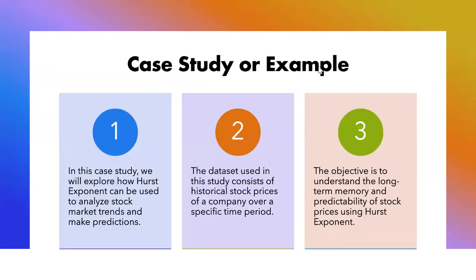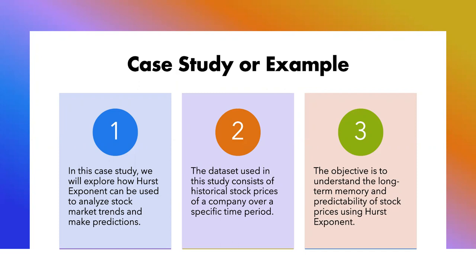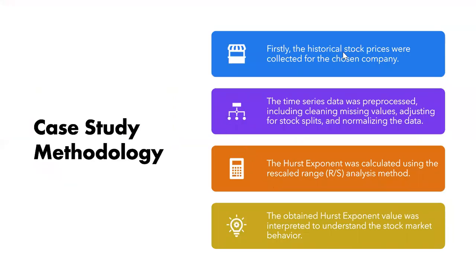I also wanted to present a case study. In this case study, we explore how the Hurst Exponent is used to analyze the stock market. The data I used is synthetic data consisting of historical stock prices from a company. The objective is to understand the long-term memory and predictability of stock prices using the Hurst Exponent. We first gathered historical stock prices, pre-processed them including cleaning values, adjusting for stock splits, and normalizing the data. We then used the RS method to calculate the Hurst Exponent and interpreted the market behavior.